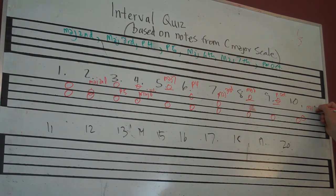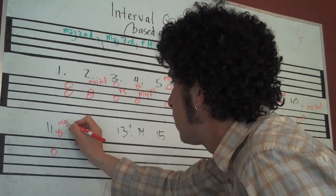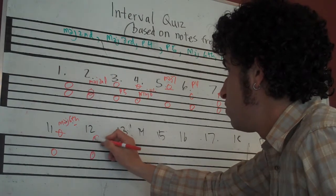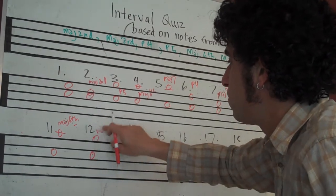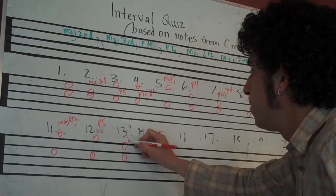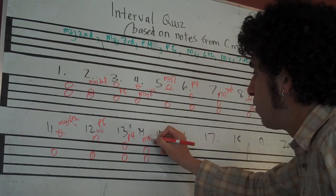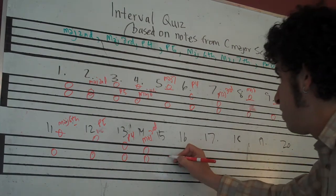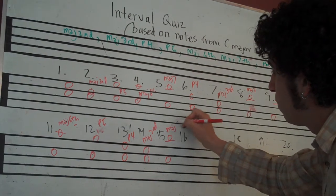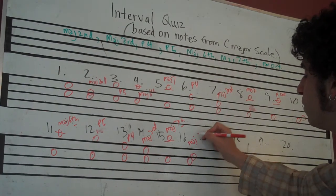Number 11 was a major sixth, C and A. Number 12 was C and G, perfect fifth. Number 13 was C and F, perfect fourth. Number 14 was C and E, major third. Number 15 was C and B, major seventh.